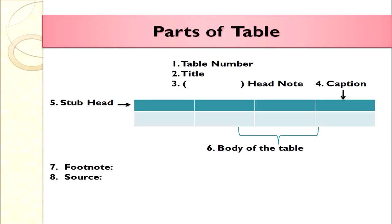Now we are going to discuss the parts or format of a table. When we discuss the format of a table, we count eight elements. The eight parts are: table number, title, head note, caption, stub heads, body of the table, footnote, and source. The body of the table is the most important part where all the information is contained.